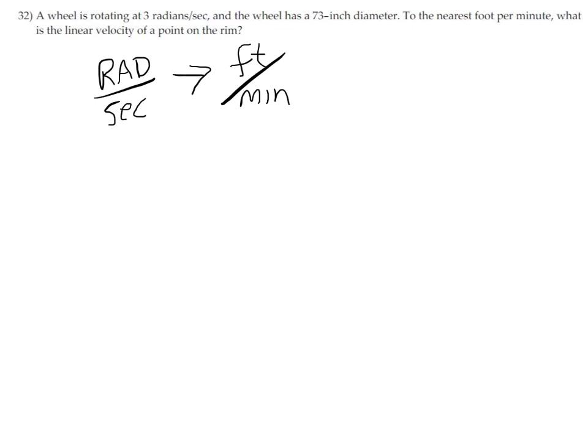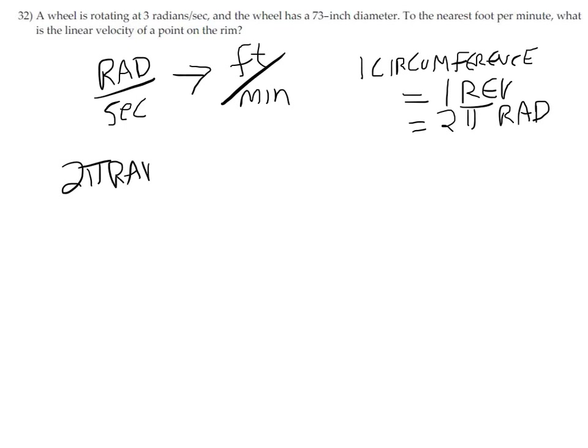Why this is so useful is because a circumference is a distance. Knowing that one circumference is one revolution or 2π radians allows us to go from revolutions or radians to an actual distance. So we have to work out: 2π radians equals one circumference, which is 2πr. We know r is half of the diameter. Actually, let's do it this way.